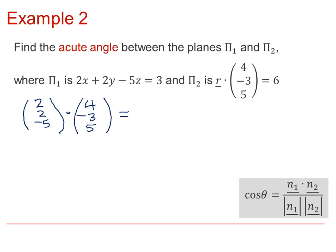Calculating the scalar product, we obtain 8, minus 6, minus 25, or minus 23. And the lengths turn out to be square root of 33, and square root 50, respectively.